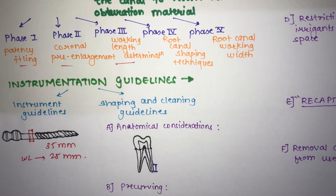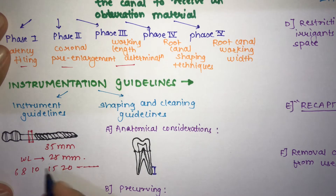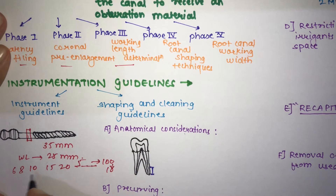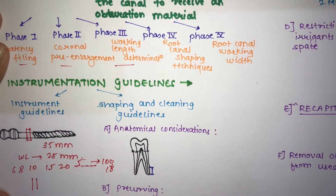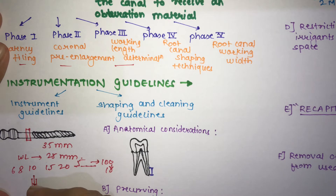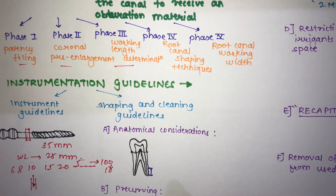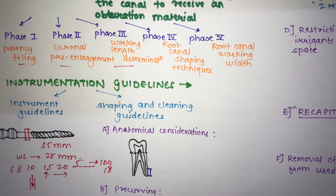The second guideline is that instruments should be used in sequence from smaller to larger size. Instrument sizes start from 6, 8, 10, 15, increasing by 5 up to 100, then increasing by 10. You always start with a smaller instrument because using a thicker instrument in a narrow canal can cause it to get engaged and break inside the canal.